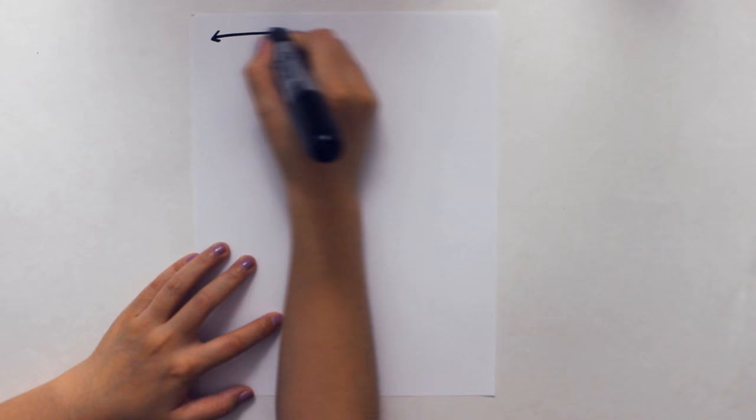When we look at a piece of paper, we see a short edge and a long edge.